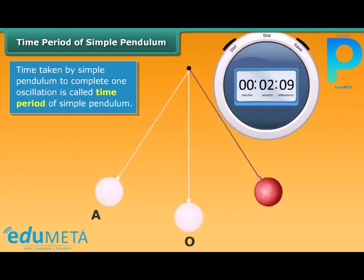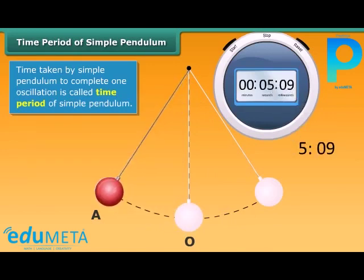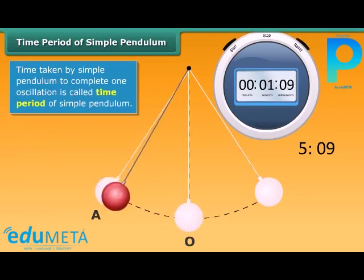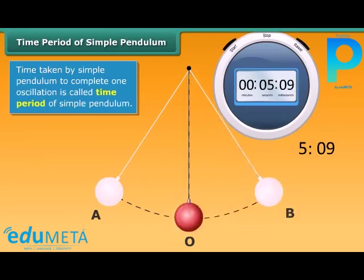Start a stop watch and release the bob at the same time. When the bob comes back to the extreme position A, note the time on the stop watch. Repeat the activity. This time, start from the equilibrium position O. Note the time taken by the pendulum to complete one complete oscillation from O to A, A to B, B to O. The time so recorded is the time period of simple pendulum.